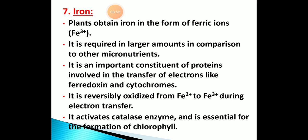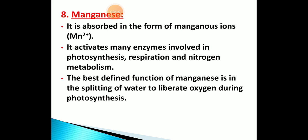Iron is a micronutrient. Plants obtain iron from ferric ions, and it is required in large amounts compared to other micronutrients. It is irreversibly oxidized from Fe²⁺ to Fe³⁺ during electron transport, and activates catalytic enzymes essential for chlorophyll formation. Manganese is absorbed in manganous ion form and activates many enzymes involved in photosynthesis, respiration, and nitrogen metabolism. The best-defined function of manganese is the splitting of water to liberate oxygen during photosynthesis.